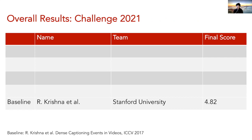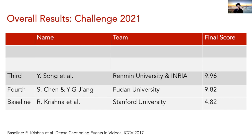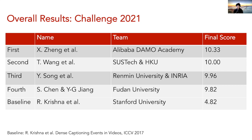Now for the overall results. The original baseline from 2017 got a final score of 4.82. In fourth place from Fudan University, the final score was 9.82. In third place from Renmin University and INRIA, the final score is 9.96. In second place from SUSTech and HKU University, we have a final score of 10.0. And in first place from Alibaba DAMO Academy, we have a final score of 10.33. We'll now be joined by the top two winners for their talks describing the technical details of their approaches.